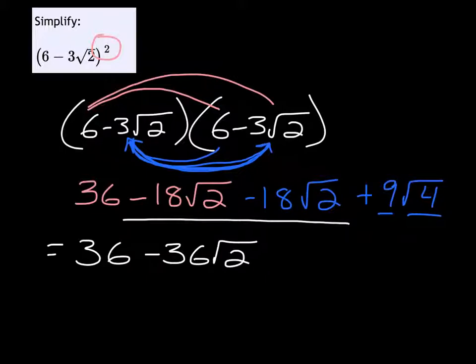And then this last term, this 9 times the square root of 4, what I'm going to do is simplify the square root of 4. That's just a 2, so that's plus 9 times 2. Instead of 9 times 2, I'm going to replace that with an 18, just to make things faster here.